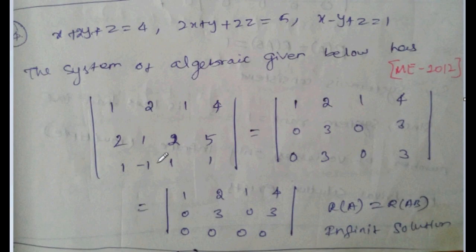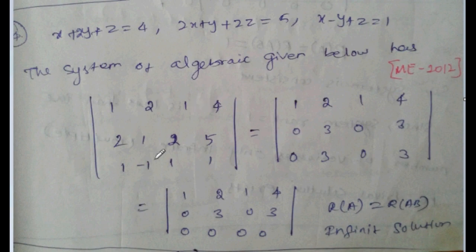As explained already, check the 3x3 coefficient matrix — equal to 0 or not equal to 0. Next, check the augmented 3x3 matrix — equal to 0 or not equal to 0. Both ranks are equal, so the system has an infinite number of solutions.